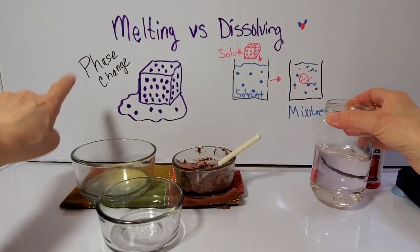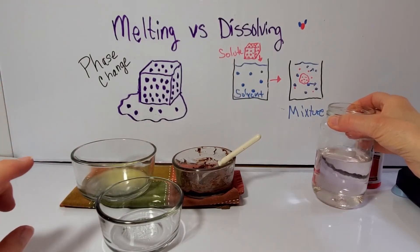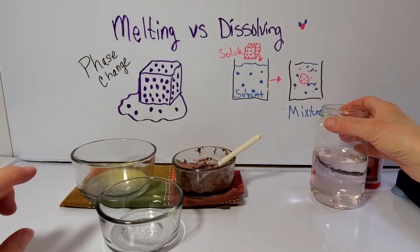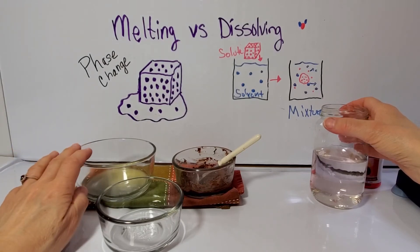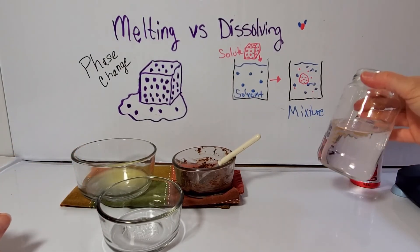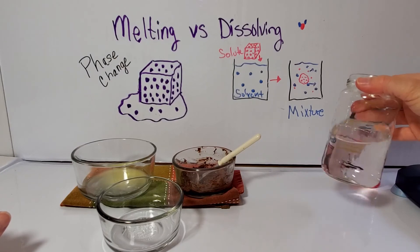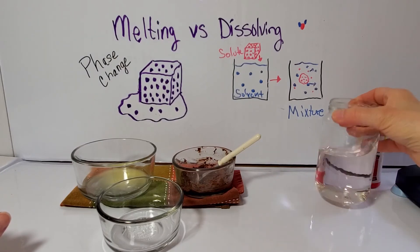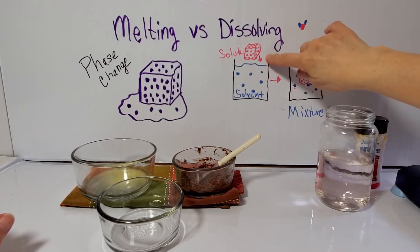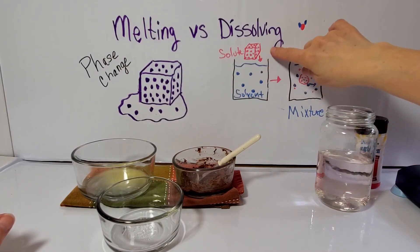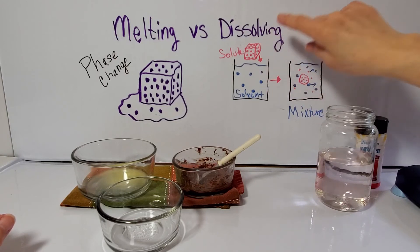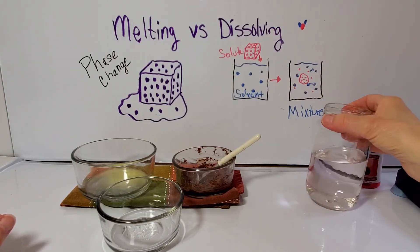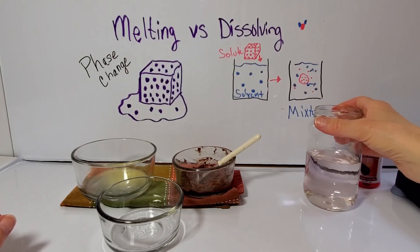I did not create a mixture in a phase change — I did not add anything new. When I melt, one thing is heated and it changes its state. When I dissolve, I need a solvent; I need to add something. Notice there are two different things in dissolving: the solvent and the solute. I need those two things for dissolving to happen.